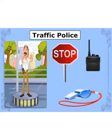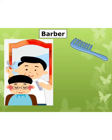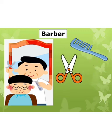The next helper is a barber. A barber cuts our hair. For cutting our hair, first he will comb our hair, so he needs a comb. Then he will cut our hair and give us a beautiful haircut with the help of scissors. He also uses a water sprayer. So these are the tools of a barber.